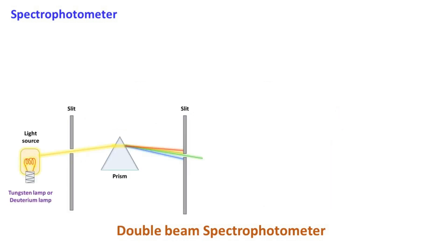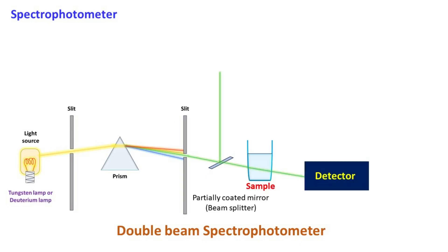The double-beam spectrophotometer consists of a partially coated mirror, also known as the beam splitter, which splits the incoming light beam into two parts.